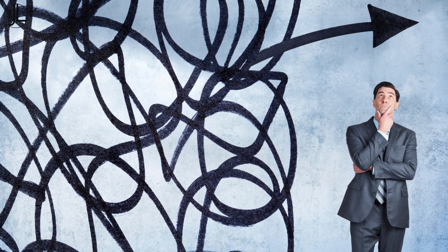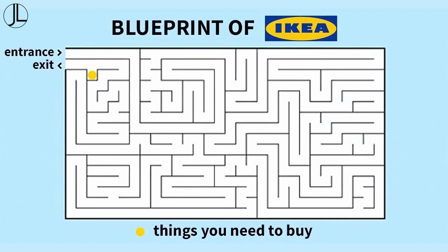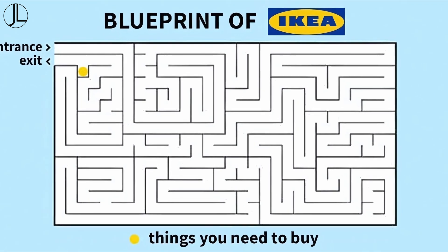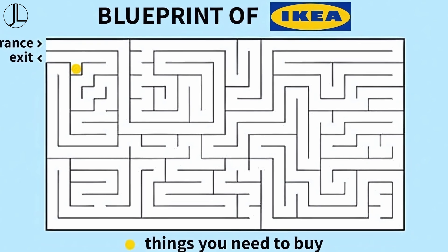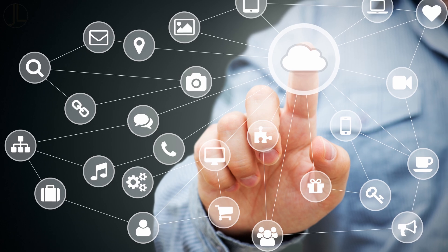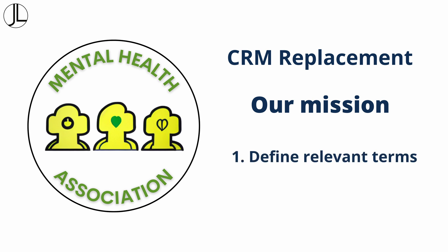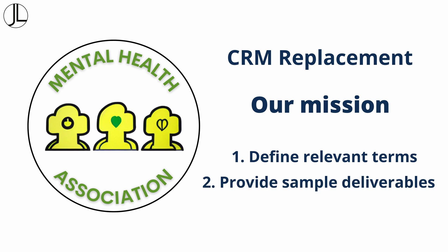Are you clear on all the definitions, or a bit confused — like entering an IKEA showroom, changing your mind halfway through and trying to find a quick way out? Let's use an example more aligned to the technology industry. My fictitious organization, the Mental Health Association, wants to replace their CRM. They want to get it right and have asked us to define our terms in the context of developing a new CRM. They have also asked for an example deliverable for each term. So let's re-unpack each term.